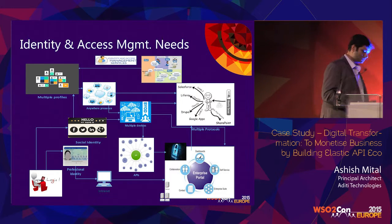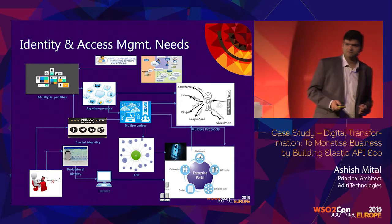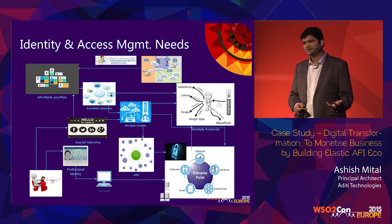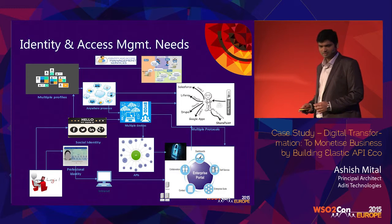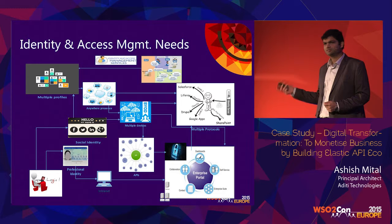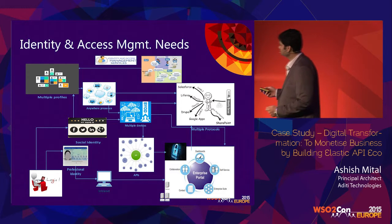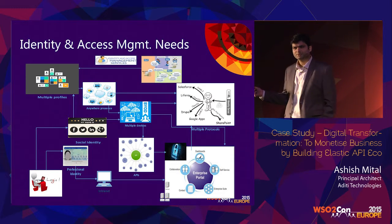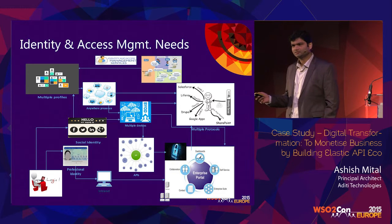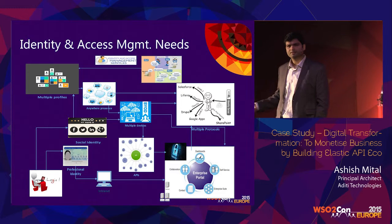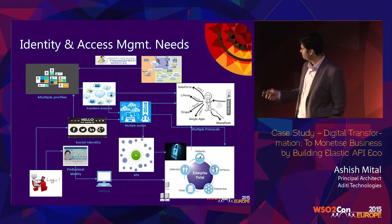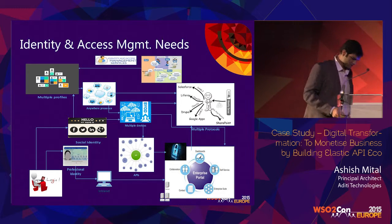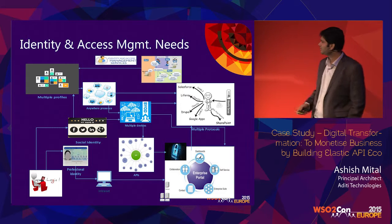We then expose everything using the API management layer, which gives you collaboration — forums, documentation, subscriptions, metering, throttling, and so forth. And finally, this is your customer touchpoints — how your customers interact with your APIs. There is one common piece required by all layers: your identity management piece. Your application requires identity and authorization services; your API manager may want to validate OAuth tokens; your ESB might want to do entitlement checks. So you expose that as a shared service.